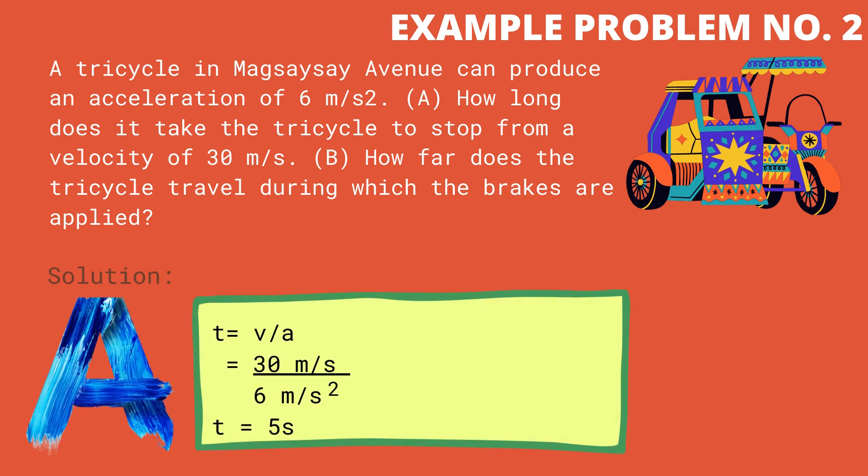To compute for time, we will use the formula for acceleration. Using algebra, we can derive the formula T is equal to V over A. That is 30 meter per second divided by 6 meter per second squared, giving us T is equal to 5 seconds.